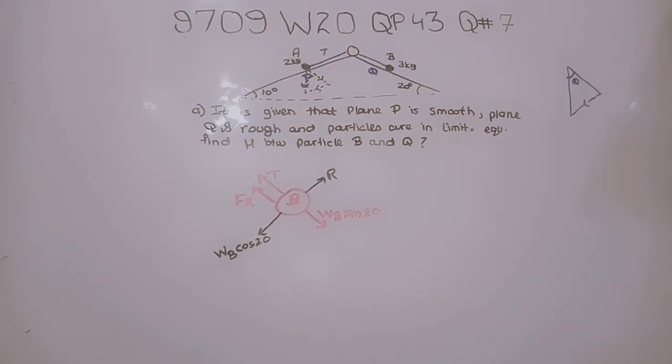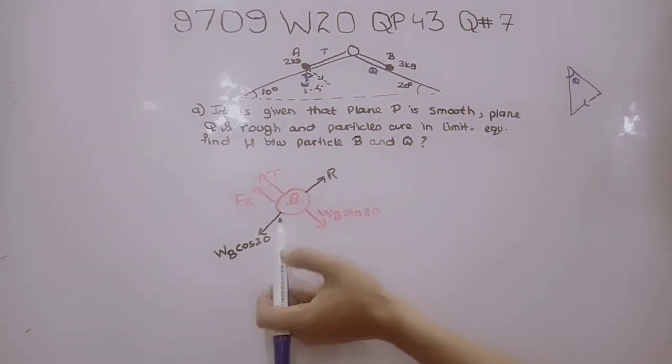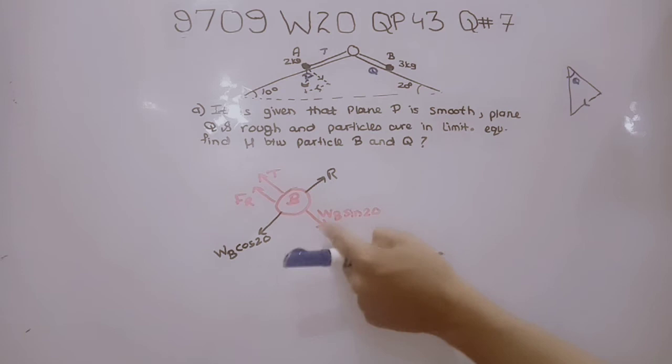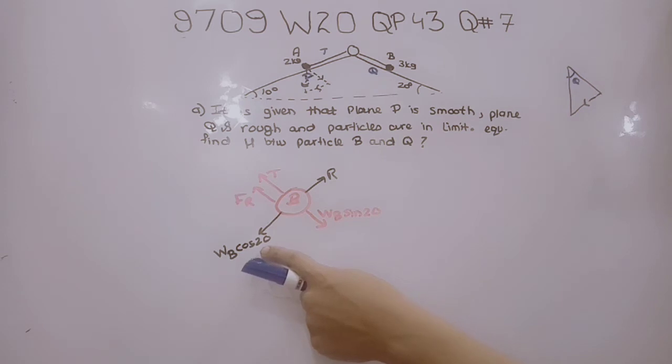We can draw the force diagram for particle B as it is on a rough surface. We include tension, the weight due to the 3 kg mass, the frictional force, and the reaction force which equals WB cos 20.